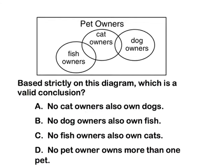Let's go ahead and take another look at an example of a Venn diagram problem. Here I see a Venn diagram of pet owners — fish owners, cat owners, dog owners. And I am asked, strictly on this diagram, which is a valid or true conclusion. Let's look at it.